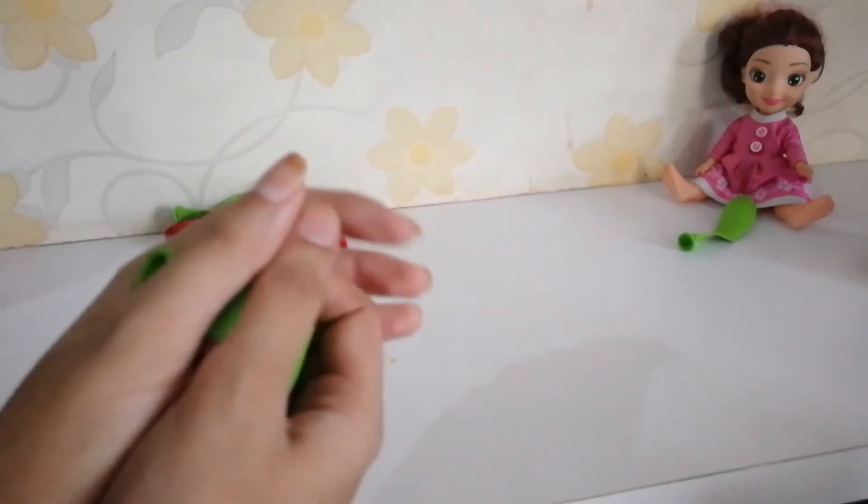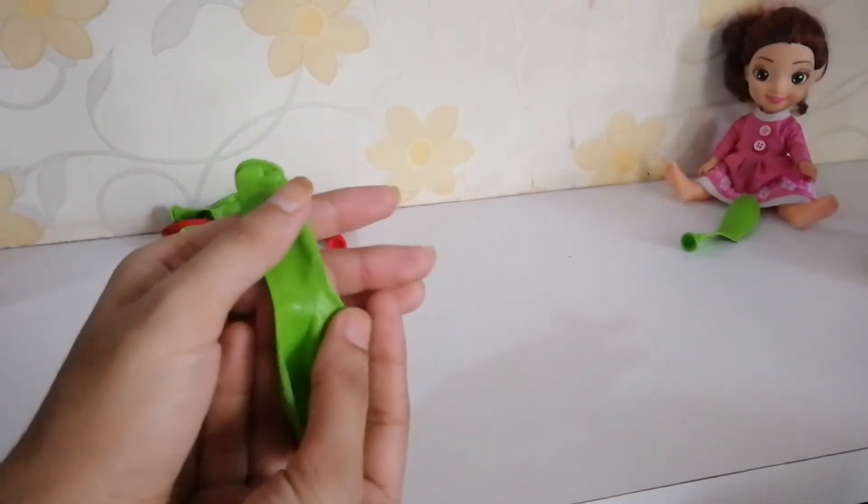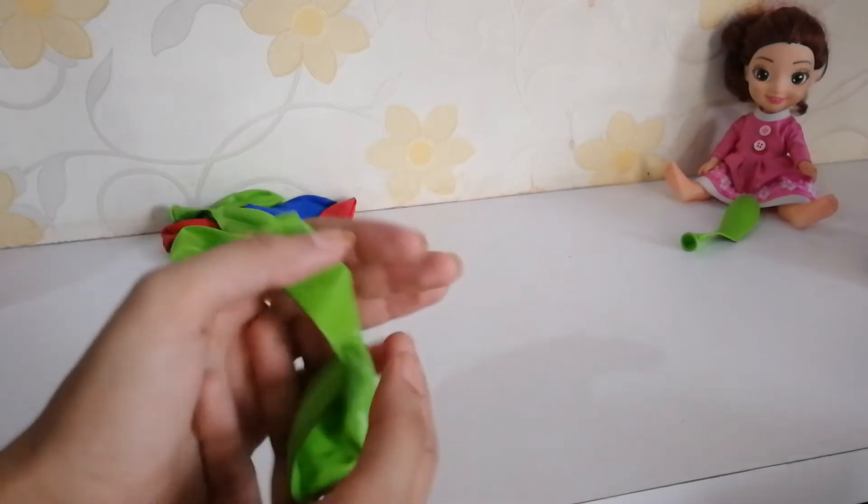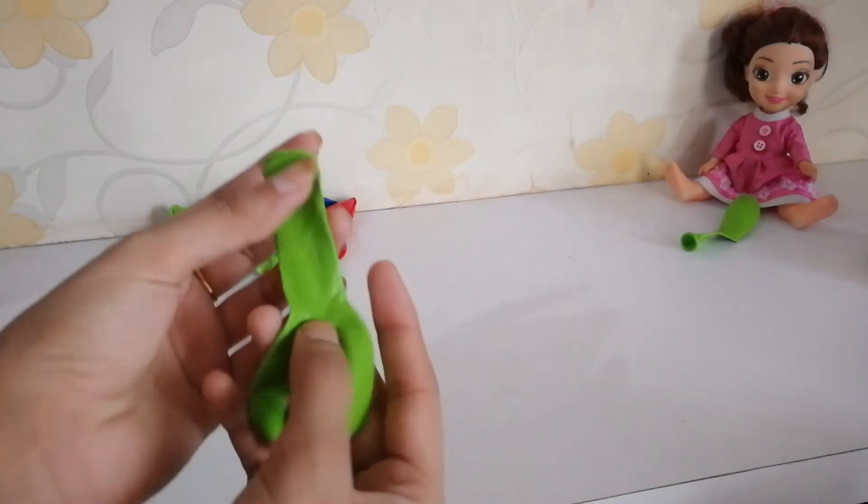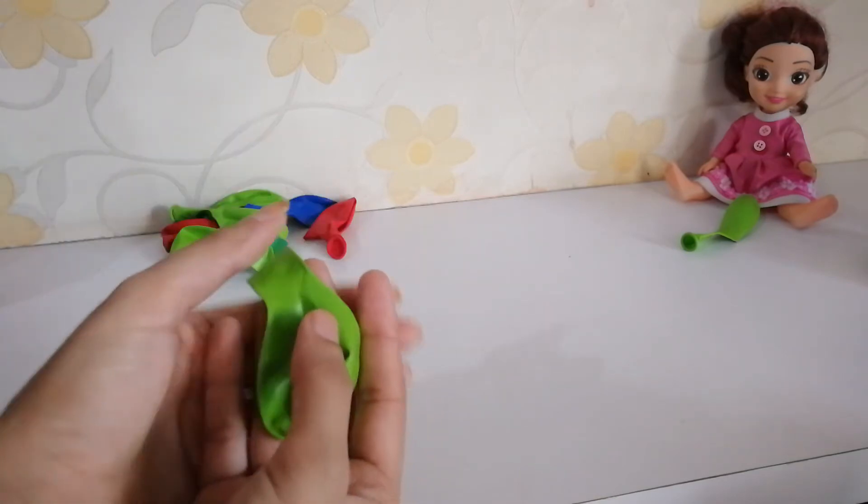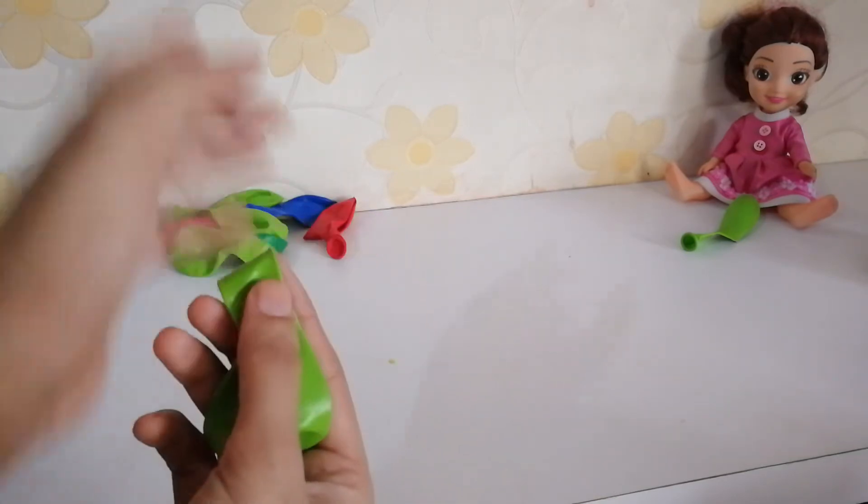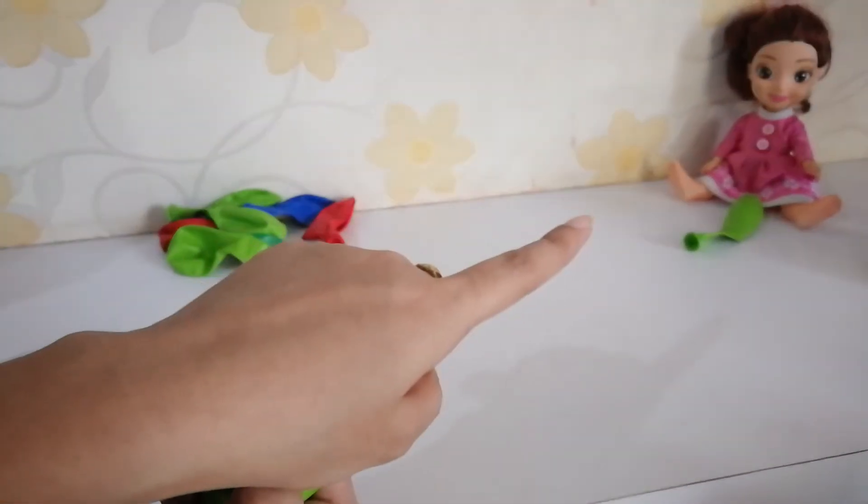Yeh mere paas hai, see? Yeh meri haath mein hai. Yeh kitna nazdik hai, mere kitna paas hai. This thing is near, this is my balloon. That is your balloon.